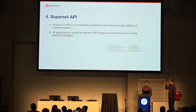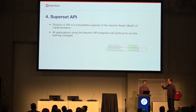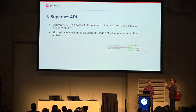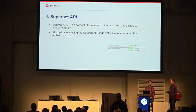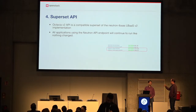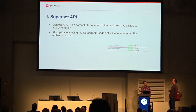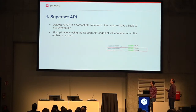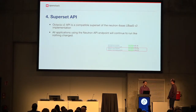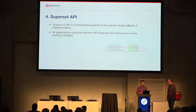The Octavia v2 API is compatible with the LBaaS v2 API, and it's a superset — there's more functionality in Octavia and more functionality coming. We now have versioning so you can see what changes are available. Because of the superset relationship, all applications which use the Neutron API endpoint will continue to run like nothing changed when run against Octavia. For instance, Heat used to run against this and just had to switch the endpoint — that worked.